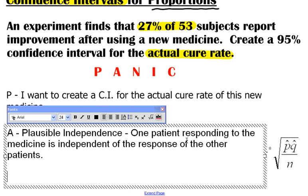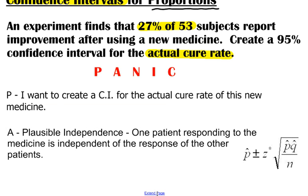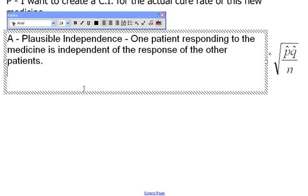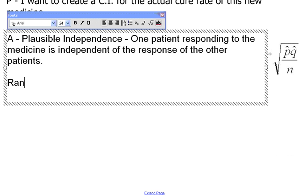The next assumption that we should check is the random sampling condition. So let me go ahead and give myself a little bit more space here. Randomization. The sample was collected randomly.